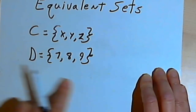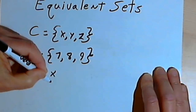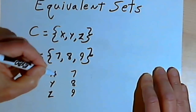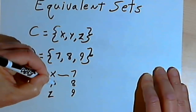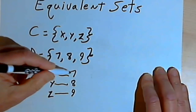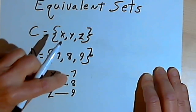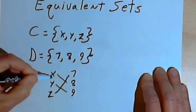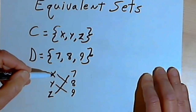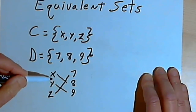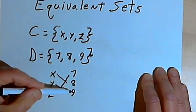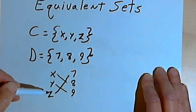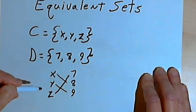And this is what that means. If I write the elements of set C — X, Y, and Z — and then I write the elements of set D — 7, 8, and 9 — I can connect an element of C to an element of D, and I can do that for all the elements. I could connect X to 7, Y to 8, and Z to 9. I could do that in a different order — connect X to 8, Y to 9, and Z to 7. It wouldn't matter what order I connect them in, as long as I can connect every element in set C to every element in set D, and vice versa. If I can do that, the sets are equivalent sets, and we say that they have a one-to-one correspondence to each other.